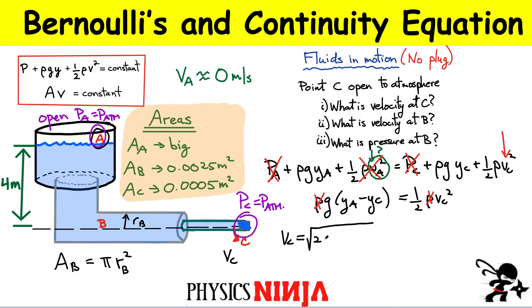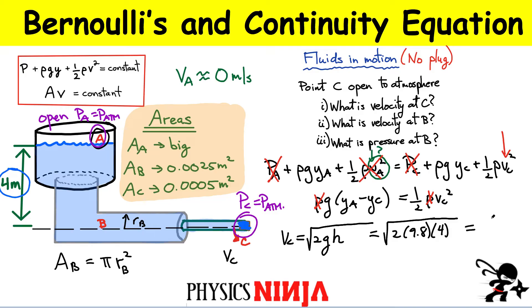Substituting the numbers: v_C = sqrt(2 × 9.8 × 4). The height H is four meters, which is the height difference between point A and point C. Calculating this gives the velocity at point C of approximately 8.85 meters per second.